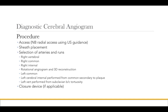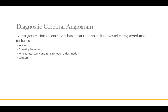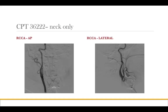Then using a closure device as applicable may be a last step. The latest generation of coding is based on the most distal vessel catheterized and includes both the access and sheath placement, all the catheter work done to reach that destination, and the closure. In other words, passing through a more proximal vessel — even when doing an angiographic run — is superseded by the most distal destination that the catheter is placed in.